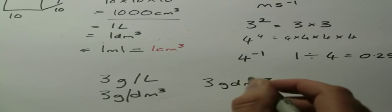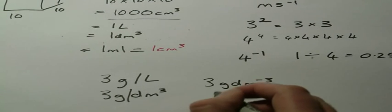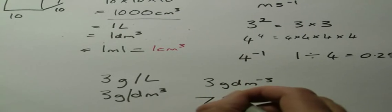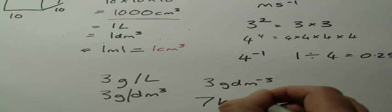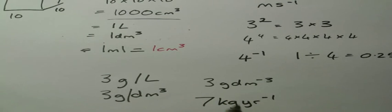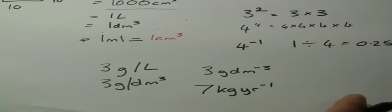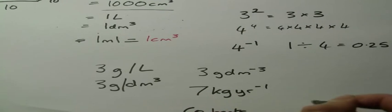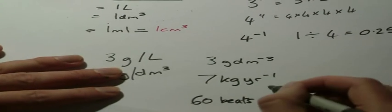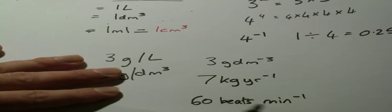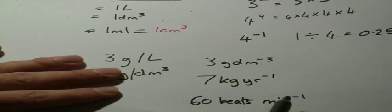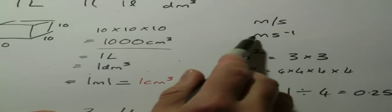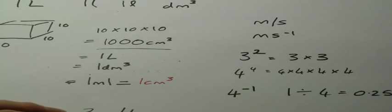So whenever you see a little negative up there, just think to yourself 'oh, it just means per.' So I could do, for example, I don't know, seven kilograms per year by writing it like that—it just means per. I could write 60 beats per minute if it was for example talking about heart rate. So that's all that little number means at the end, it just means per, just like you would write it out here, but that's just the scientific way of writing these things out.